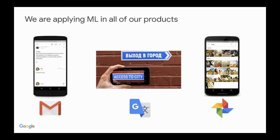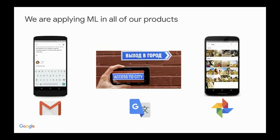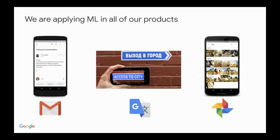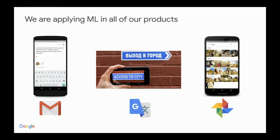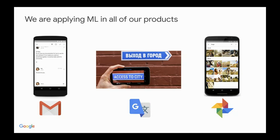The last example is Google Photos, where you can actually search for a person. I can search for my son's name and see all his pictures because the machine learns his face. So machine learning is everywhere, and we just need to use it.